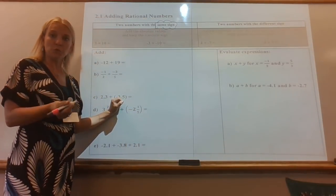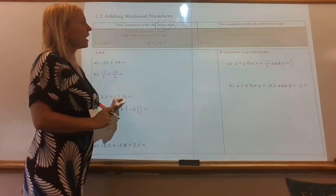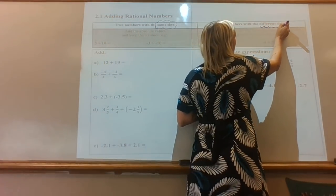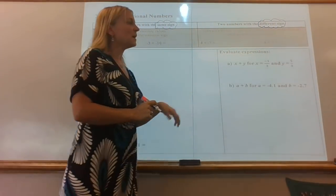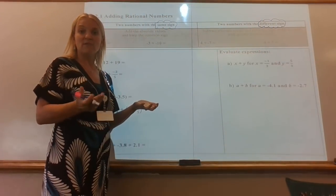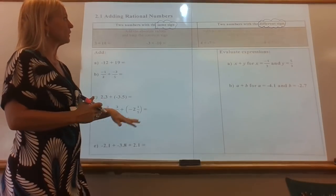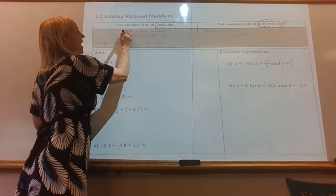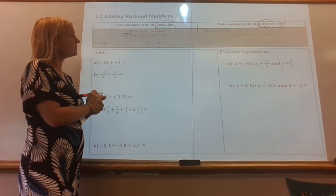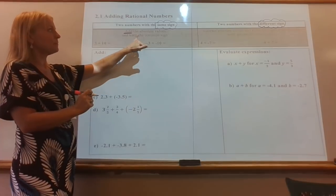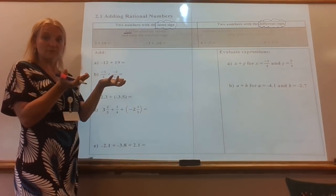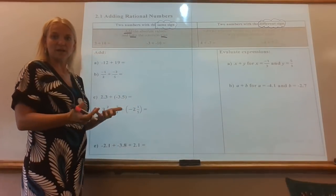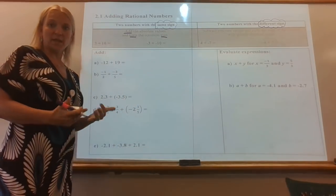Same sign would mean both positive or both negative. Or your two numbers could have different signs — one's positive and one's negative. When they're the same sign — both positive or both negative — we are going to add the numbers. Add the absolute values, meaning just add the two numbers themselves, ignore the sign, and then keep the sign. If they're both positive it stays positive; if they're both negative it stays negative.